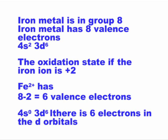Now that we know how many valence electrons there are for an iron metal, and we know the oxidation state of our iron, we can calculate the number of valence electrons that our iron contains. So it's 8 minus 2, which equals 6. Our iron 2+ has 6 valence electrons — we have no electrons in our 4s orbital and 6 electrons in our 3d orbital, which means we have 6 electrons in our d orbital.